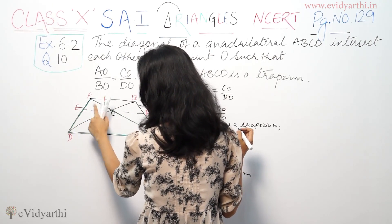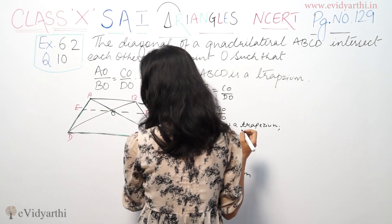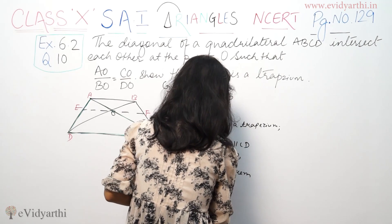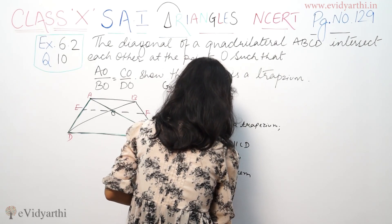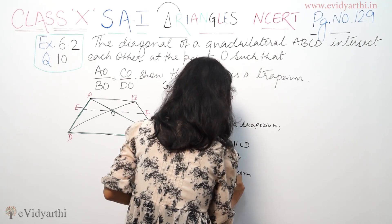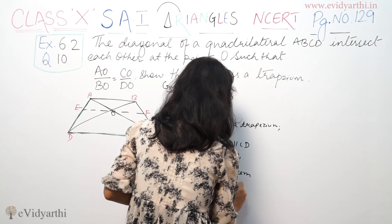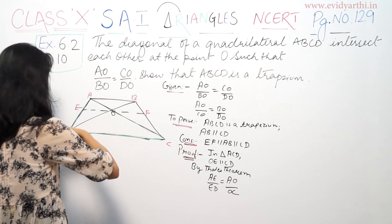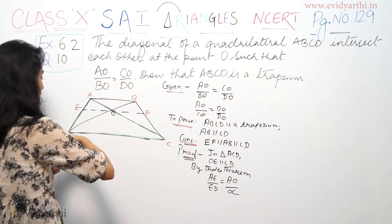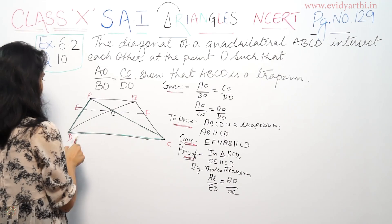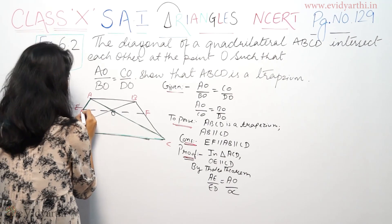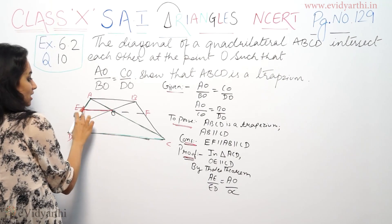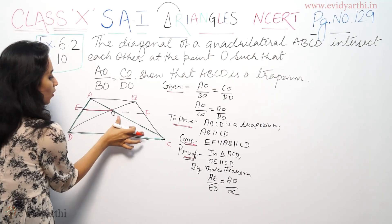So by here, O — so ED equals to P2 by OC. And this is our line. So AB and ED — ACO is a triangle.